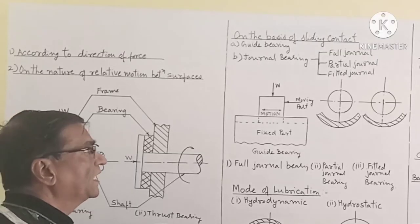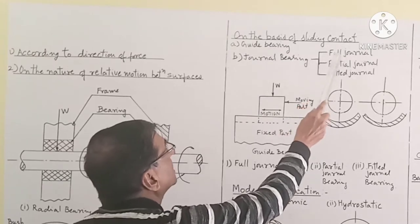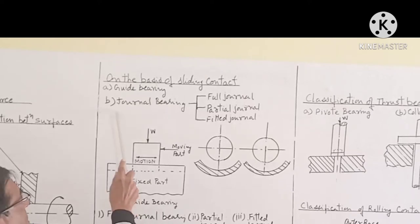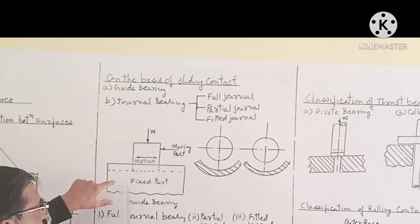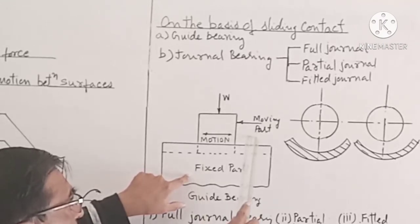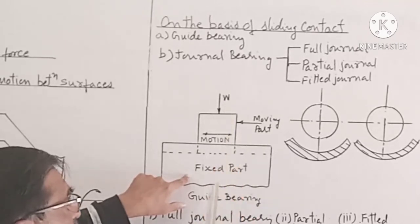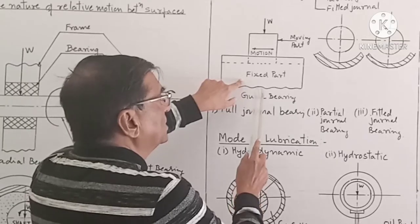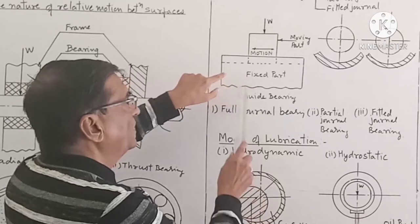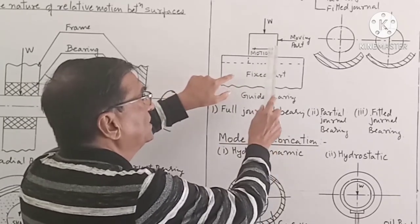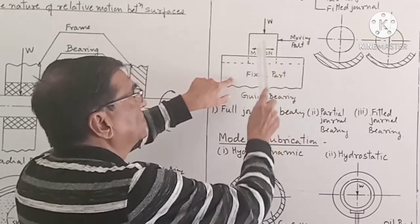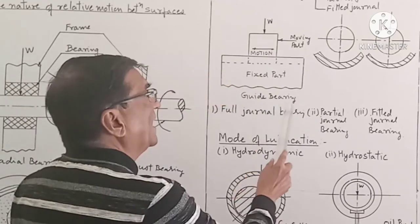Classification on the basis of sliding contact bearing: the guide bearing and journal bearing. In guide bearing, the moving part slides and the direction of load is downward. This type of bearing is generally used in a lathe to support the carriage — the bed serves as a bearing and the carriage moves along the horizontal direction. This is guide bearing.